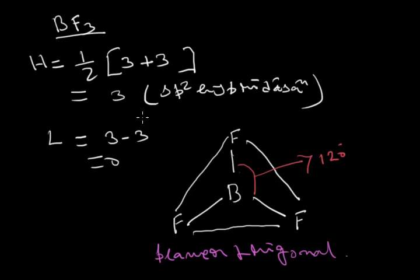The hybridized orbital count is 3, so the shape of the molecule is planar trigonal. This is because, to minimize the repulsion between 3 hybridized orbitals, they are directed along the 3 corners of an equilateral triangle.